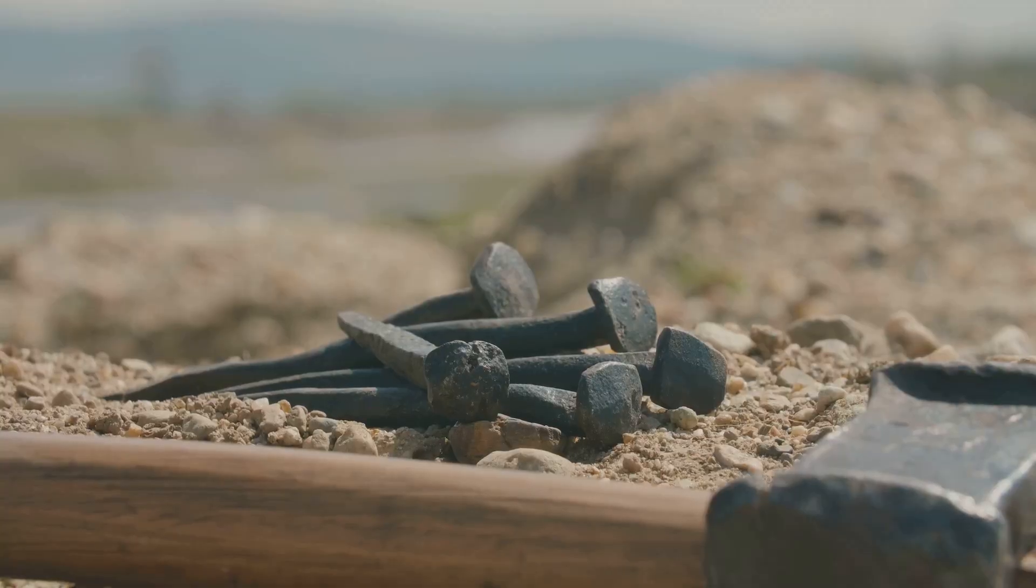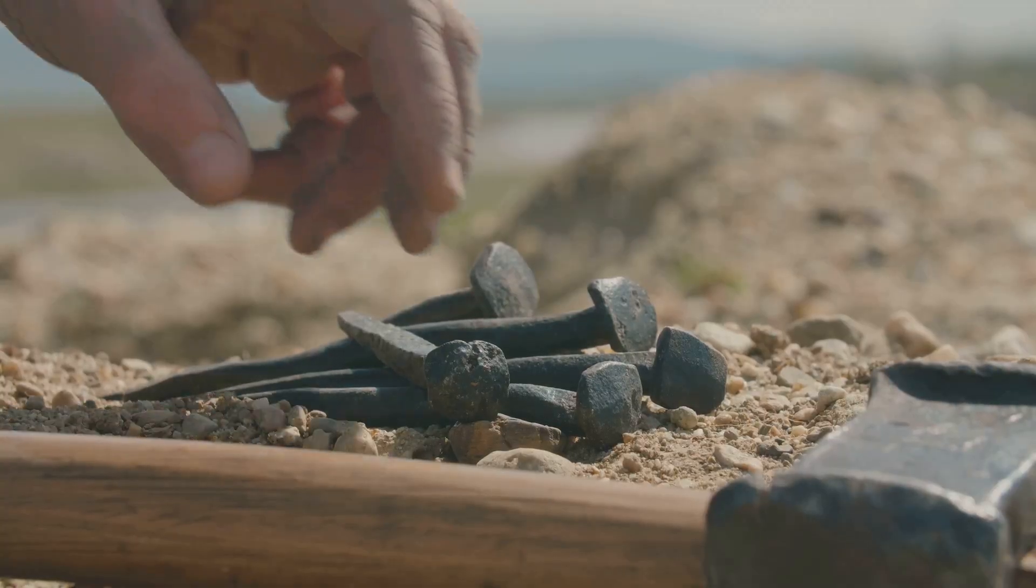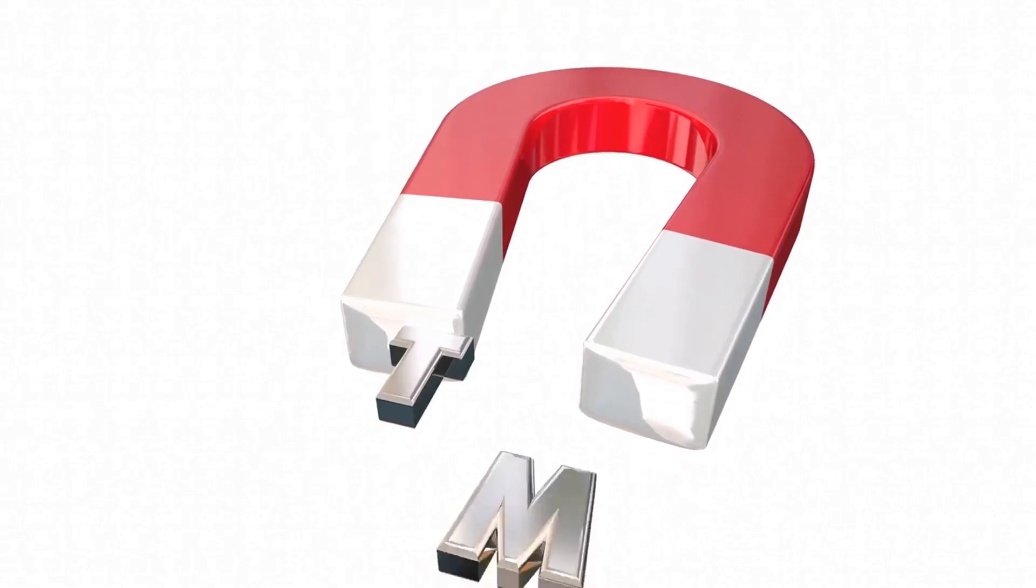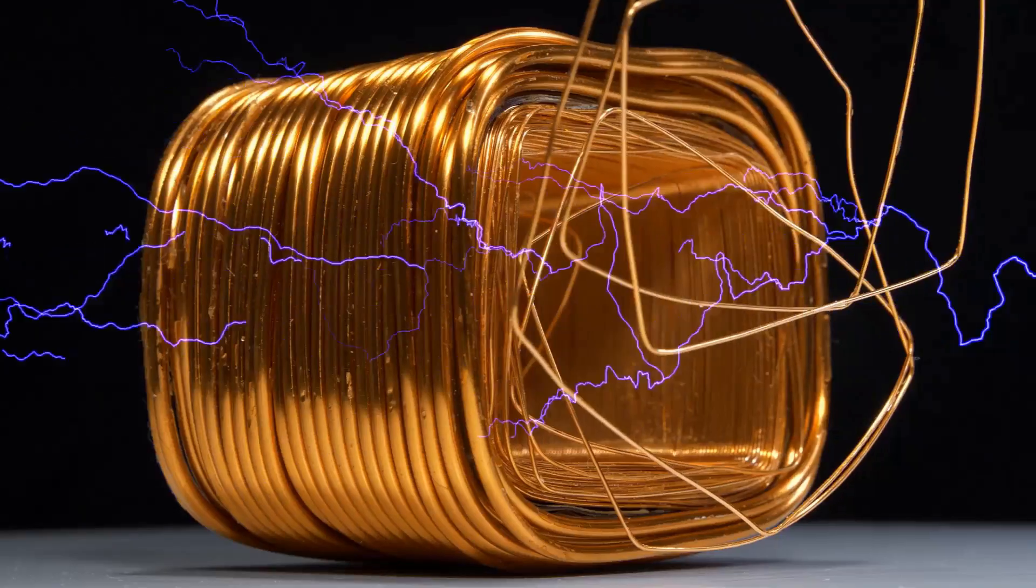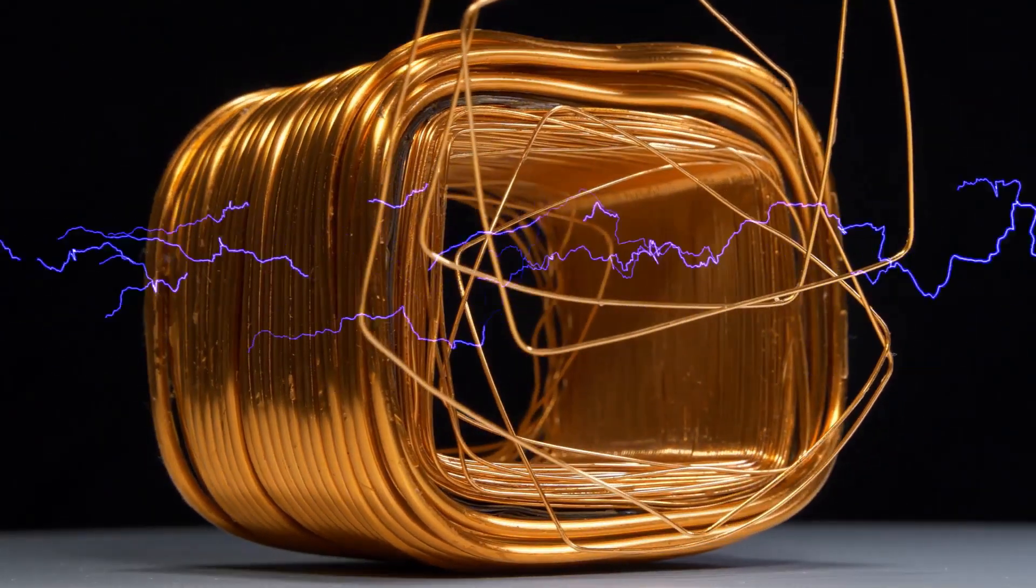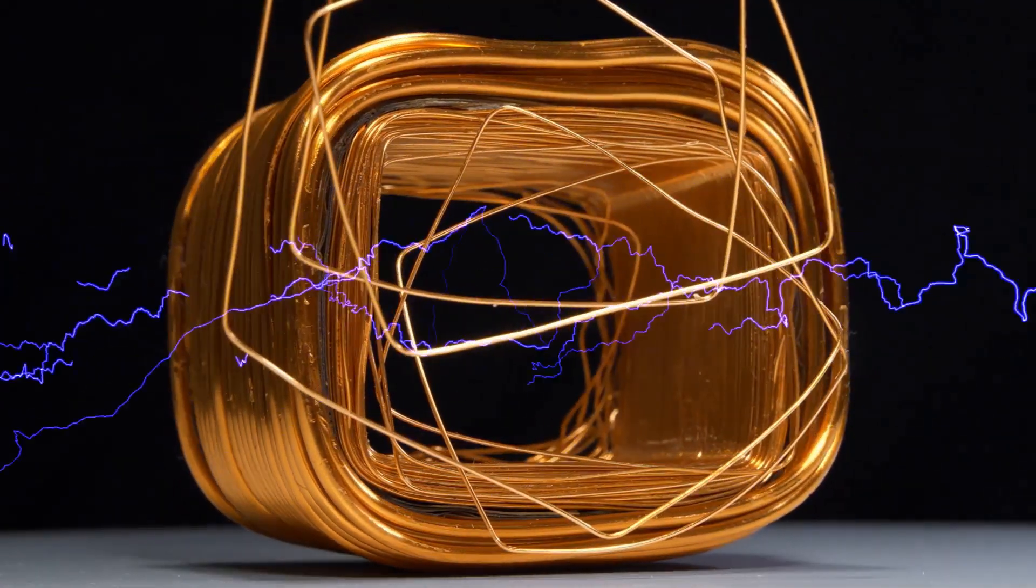We make an electromagnet by wrapping wire around a piece of iron like a nail. When electricity flows through the wire, the nail becomes magnetic. The more loops of wire we add or the more electricity we use, the stronger the electromagnet becomes.